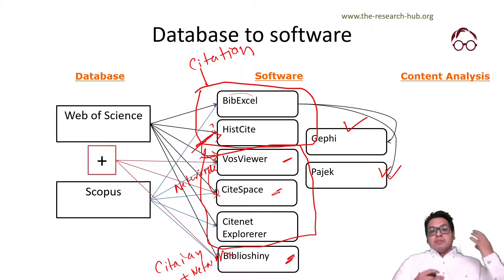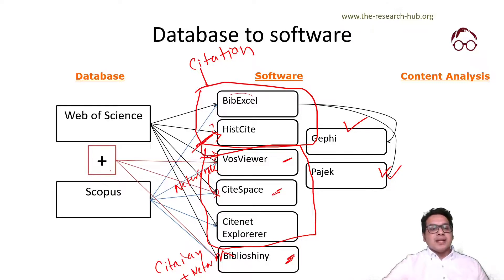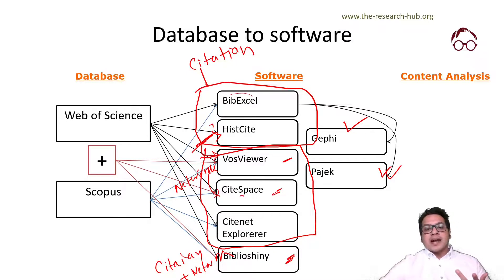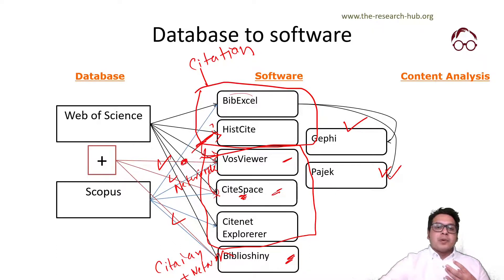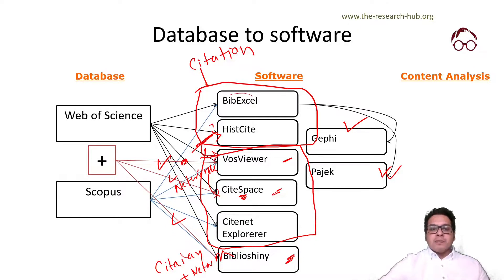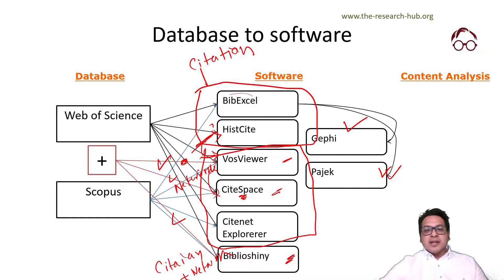As mentioned earlier, before 2020 it was not really possible to combine multiple databases easily, but nowadays we can. We will show you how using two softwares — Citespace and BiblioShiny. The data prepared using BiblioShiny can also be used in VosViewer for citation analysis. So if you know how to combine data from these two databases using BiblioShiny, you can also use that in VosViewer.